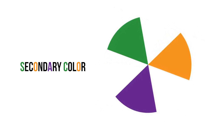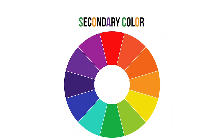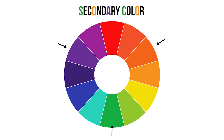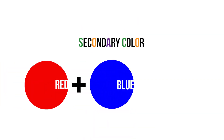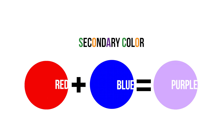Secondary color. The three secondary colors are green, orange, and purple. A secondary color is a color made from mixing two primary colors.